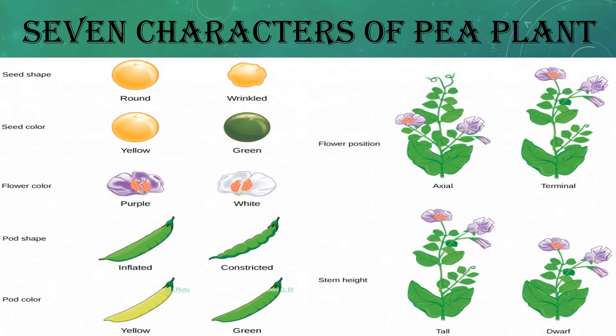The first character he selected was seed shape. In seed shape, there were two alternative forms: one is round and the second is wrinkled. As shown in the slide, the first column represents all the dominant characters. Round is dominant and wrinkled is the recessive one. Later we will study what dominant and recessive characters are.